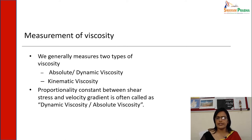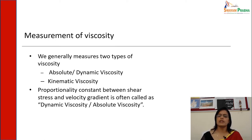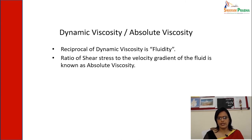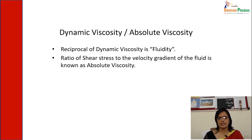Generally we measure two types of viscosity: absolute dynamic viscosity and kinematic viscosity. The proportionality constant between shear stress and velocity gradient is called dynamic viscosity or absolute viscosity. The ratio of shear stress to velocity gradient of the fluid is known as absolute viscosity. The reciprocal of dynamic viscosity is fluidity.